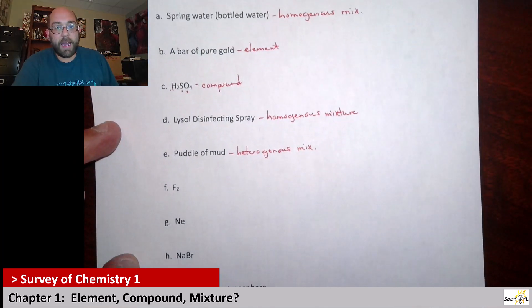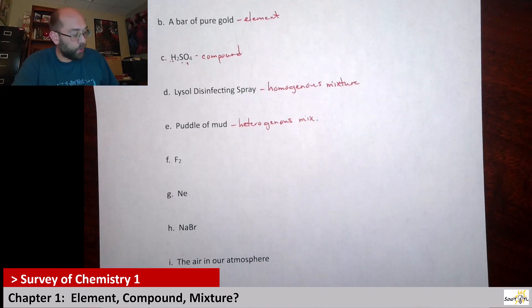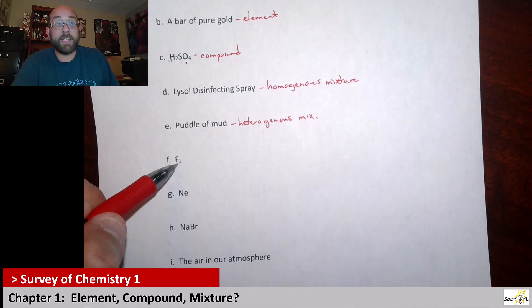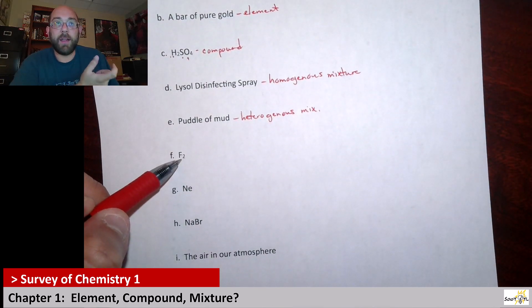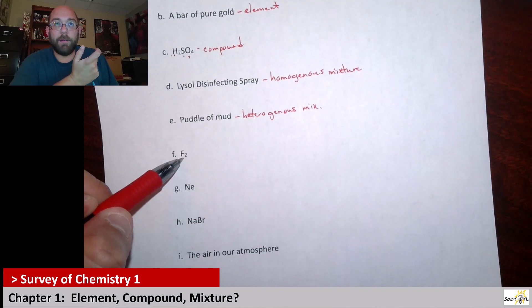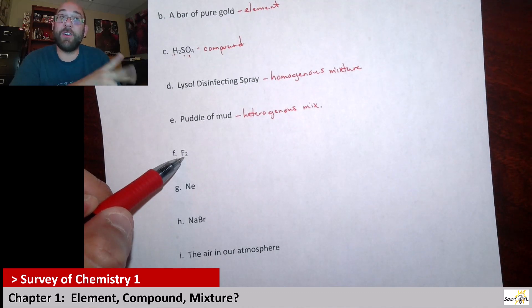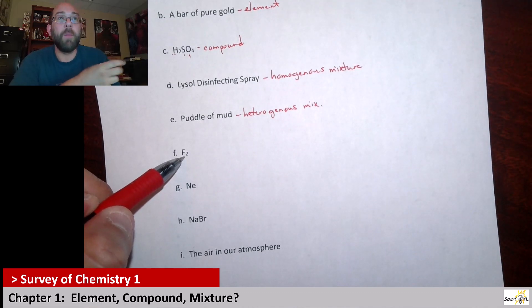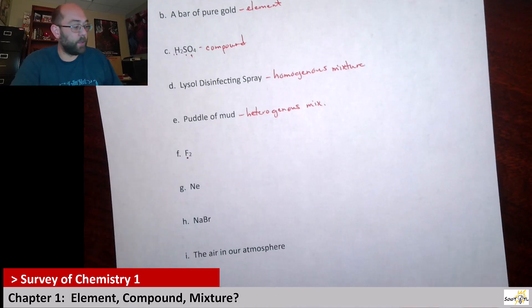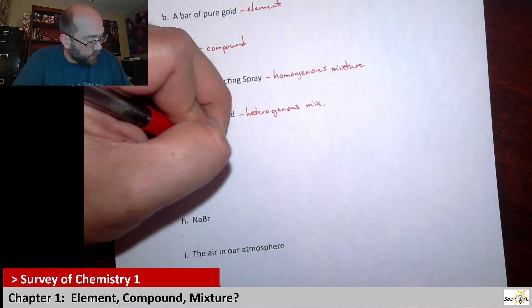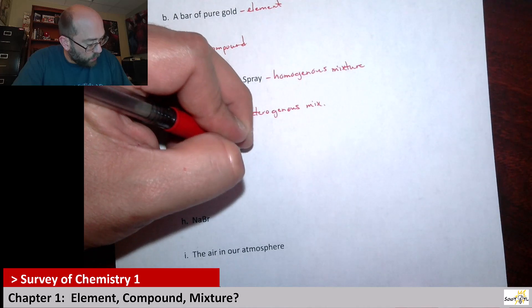Alright, next we have F2. Now this is saying that's fluoride, but it's saying there's this thing that has two fluorines in it. So right off the bat, it's not just an element. This is technically considered an elemental form, but it's two atoms together to give you a compound. So I would consider this a compound.